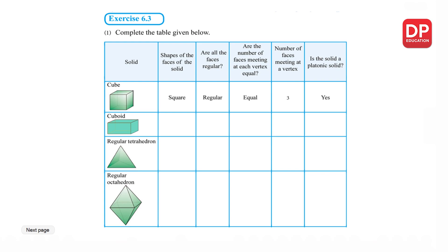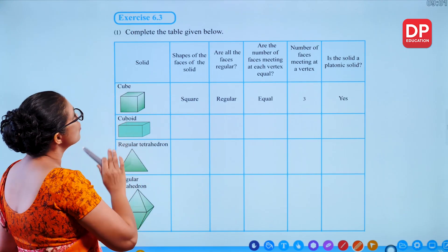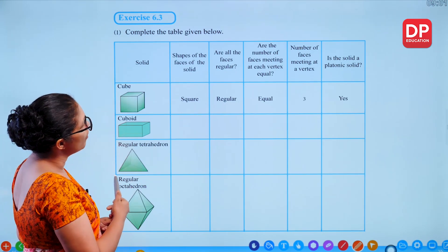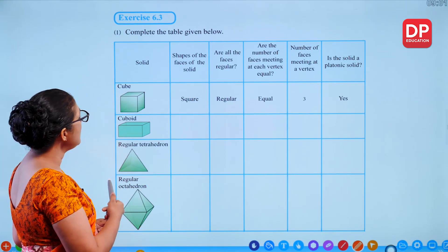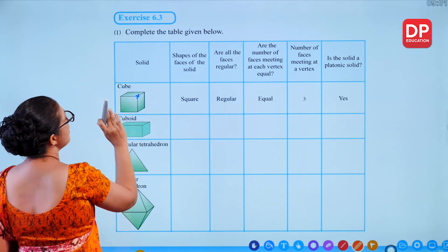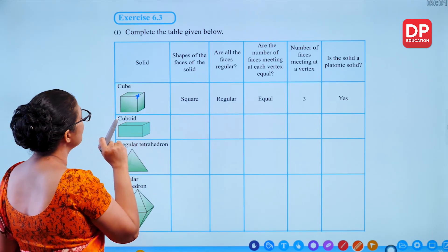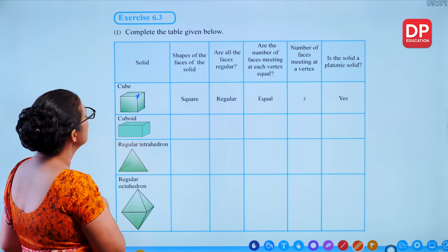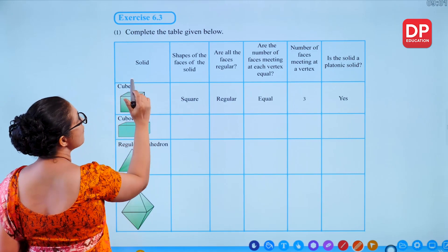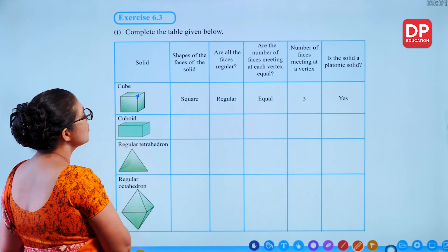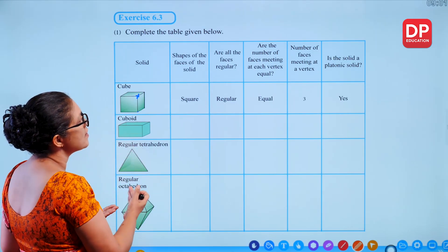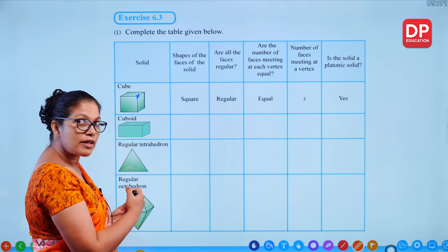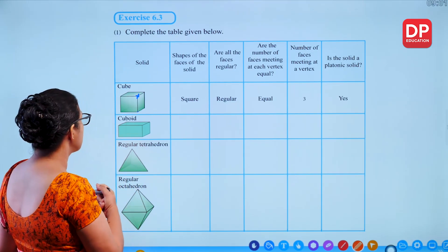Exercise 6.3: Complete the table. For a cube: the shape of each face is a square. Are all faces regular? Yes. Are the number of faces meeting at each vertex equal? Yes — 3 faces meet at each vertex. The cube is a platonic solid.